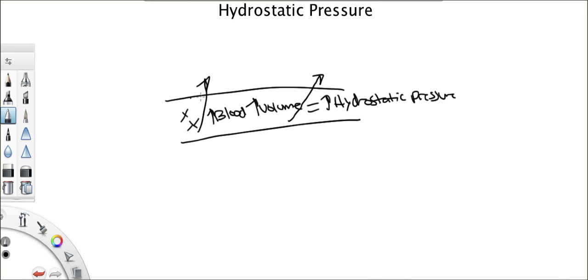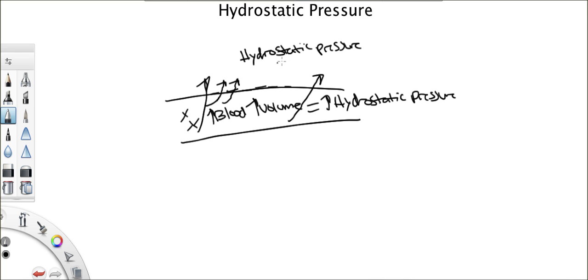What happens is that the capillary membranes can't hold that pressure in. So what ends up happening is that small amounts of plasma leak through when the hydrostatic pressure inside the blood vessel becomes really high. There's also hydrostatic pressure outside the blood vessel, but this is a very, very low pressure — it's actually negligible when it comes to calculations.